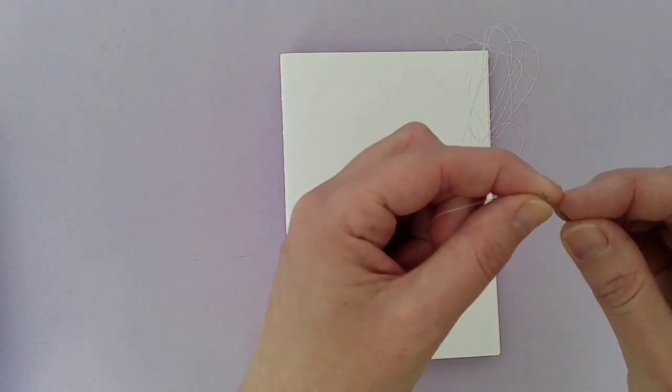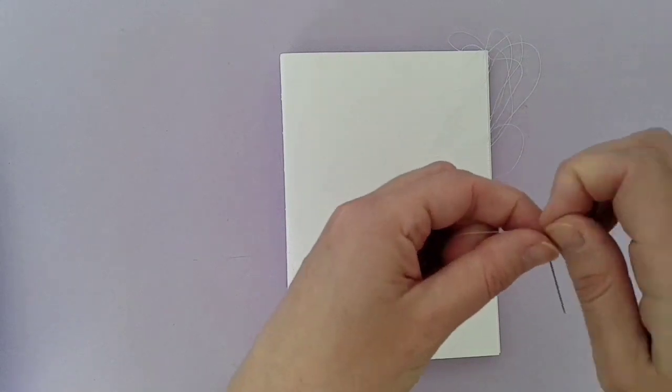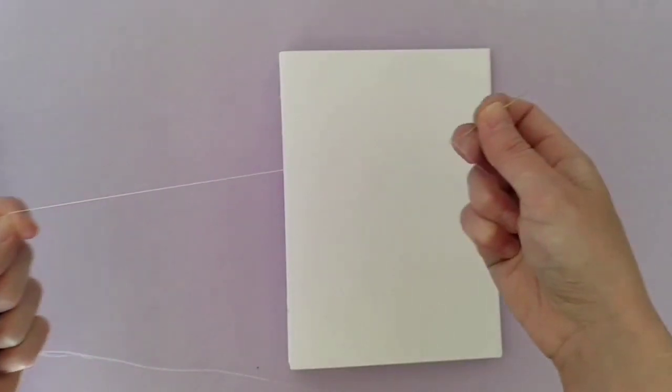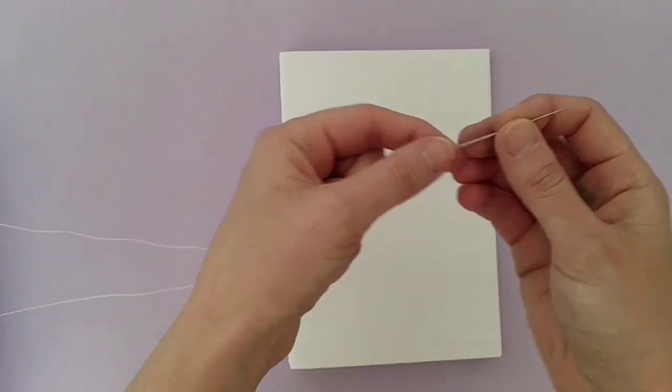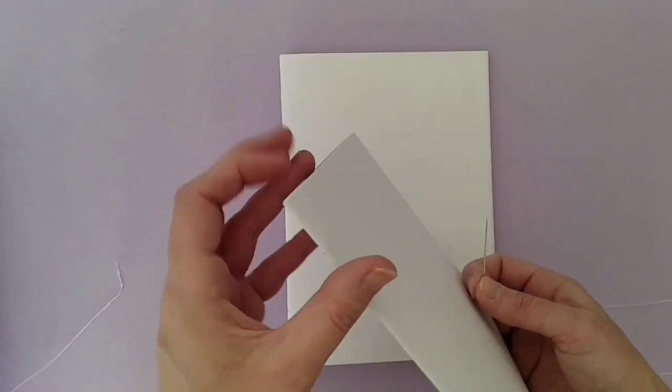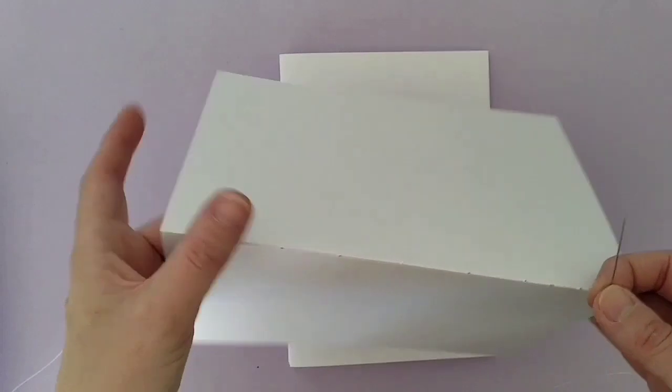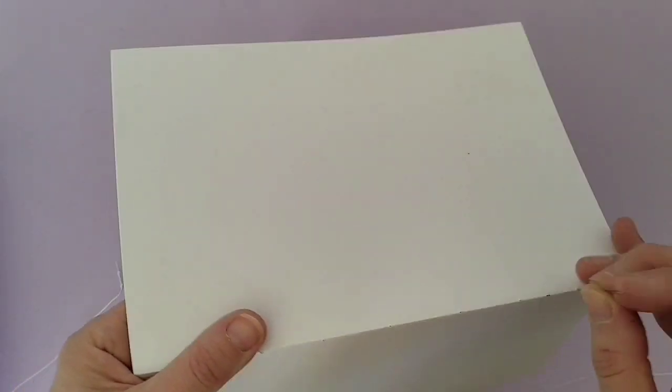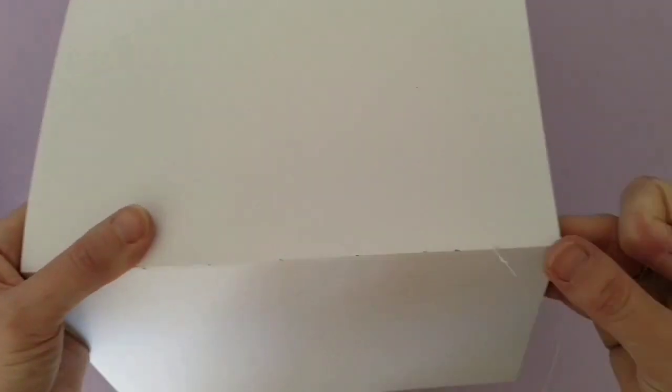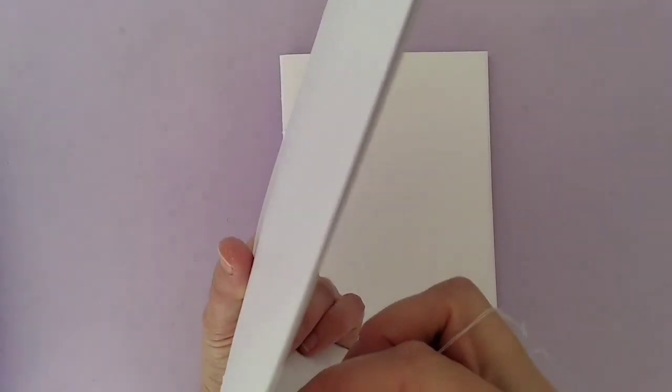I thread the needle and I double the string over and tie a knot in the end. You want the knot to be really quite large, and you'll see why in a moment, but the knot needs to be large so that it doesn't pull through to the other side and we can use that knot later. You first start off by going in one end of the signature down the bottom, and you go from the back through to the middle going through all of the pages of that particular signature. Then you weave all the way along so you go in and out all the way to the top of that page.